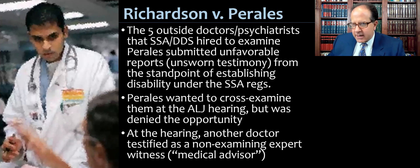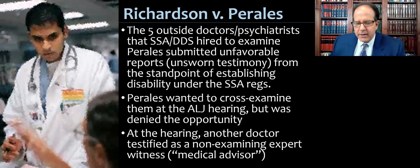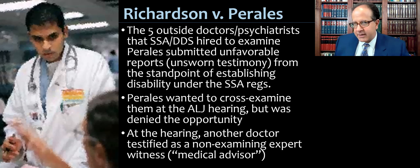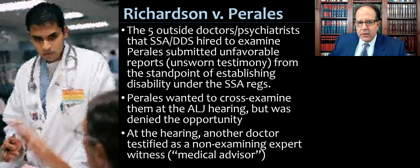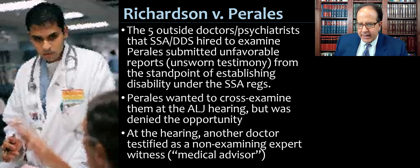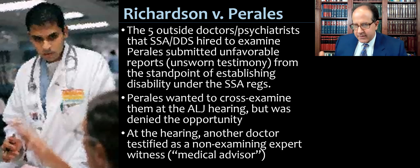The five outside doctors and psychiatrists that the SSA and DDS hired to examine the claimant submitted unfavorable reports — unsworn testimony — at least from the standpoint of establishing disability under SSA regulations. They ranged in thinking he had some mild problems to that he was malingering, meaning pretending to be sick to get out of work. Perales, when he went to a hearing, wanted to cross-examine these doctors in front of the ALJ and was upset that the ALJ hadn't subpoenaed them to testify and authenticate their medical reports, but he was denied the opportunity.